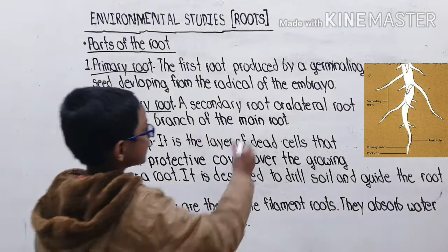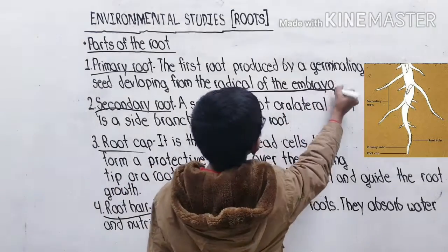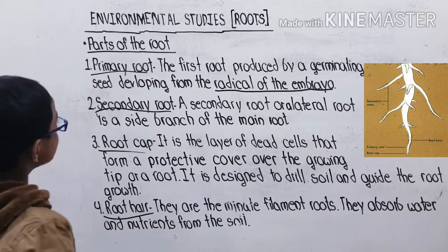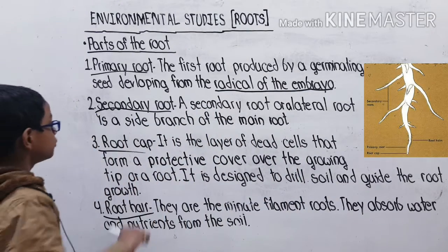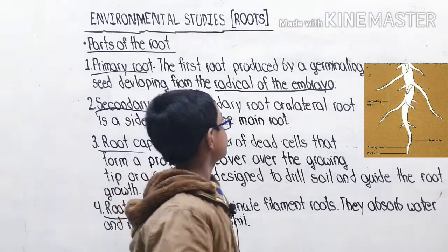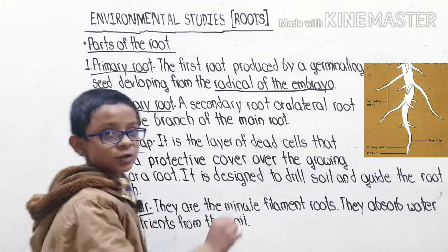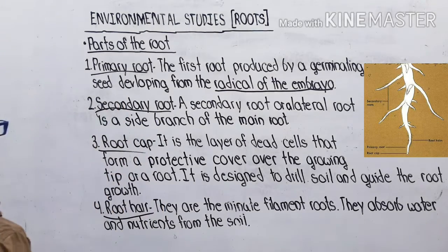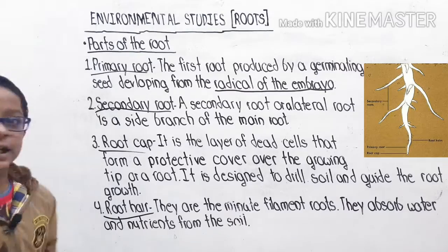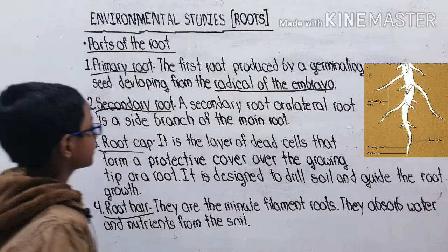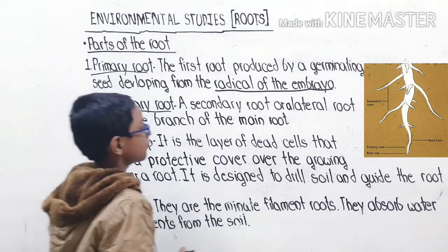Secondary root: a secondary root, or a lateral root, is a side branch of the main root. Secondary root wo hota hai jo main root ke bagal mein side branch hota hai — use ham log secondary root kehte hain.